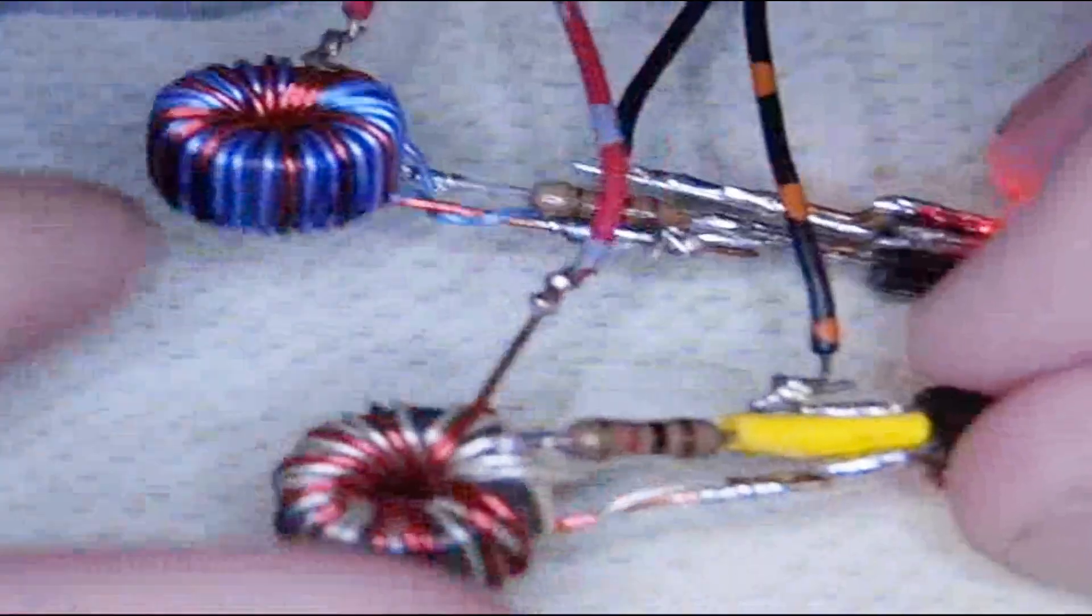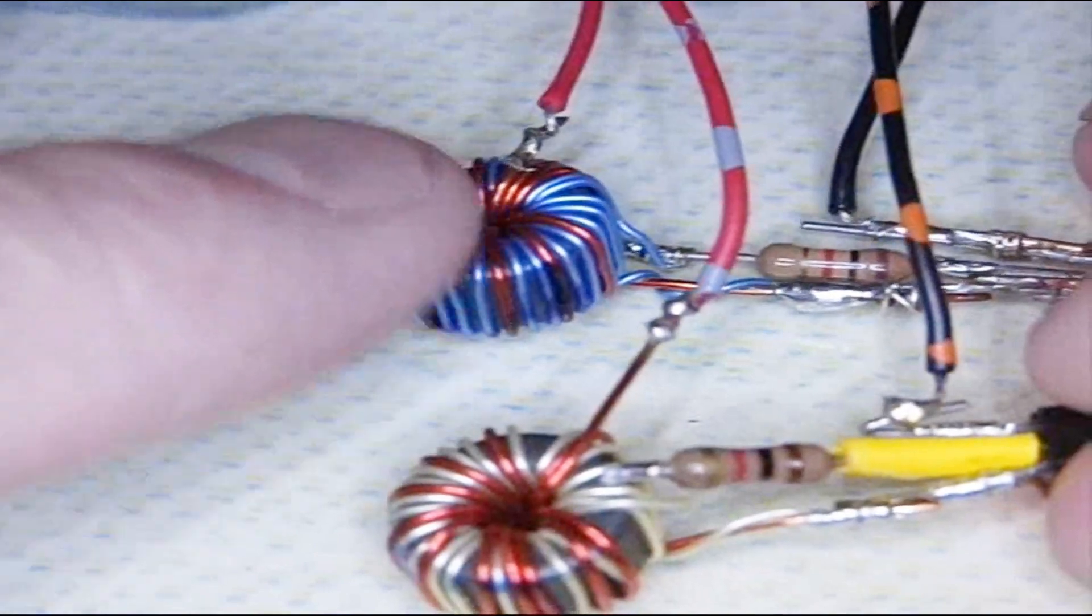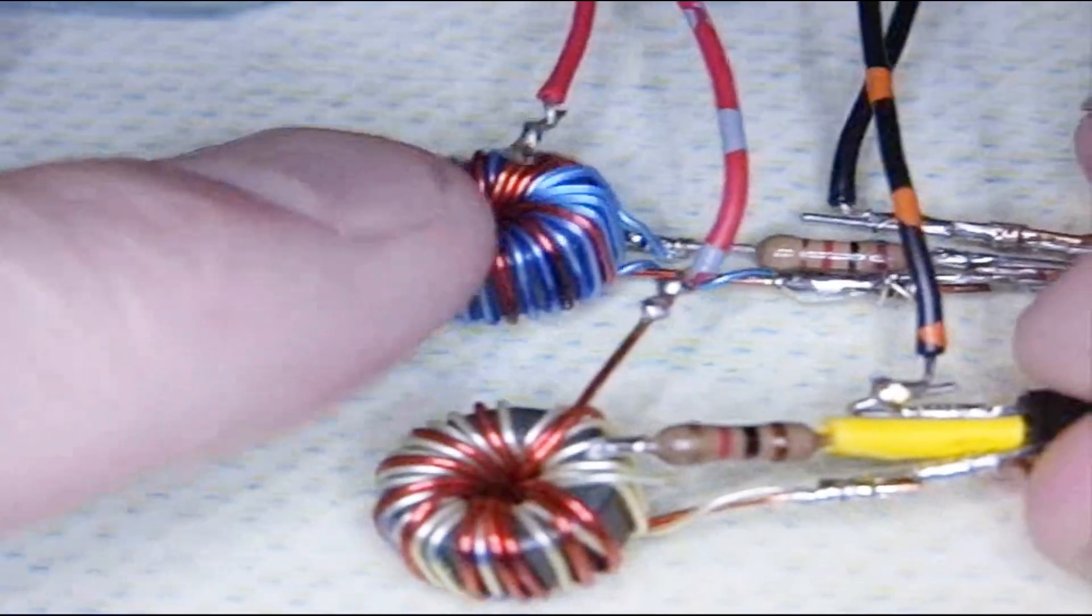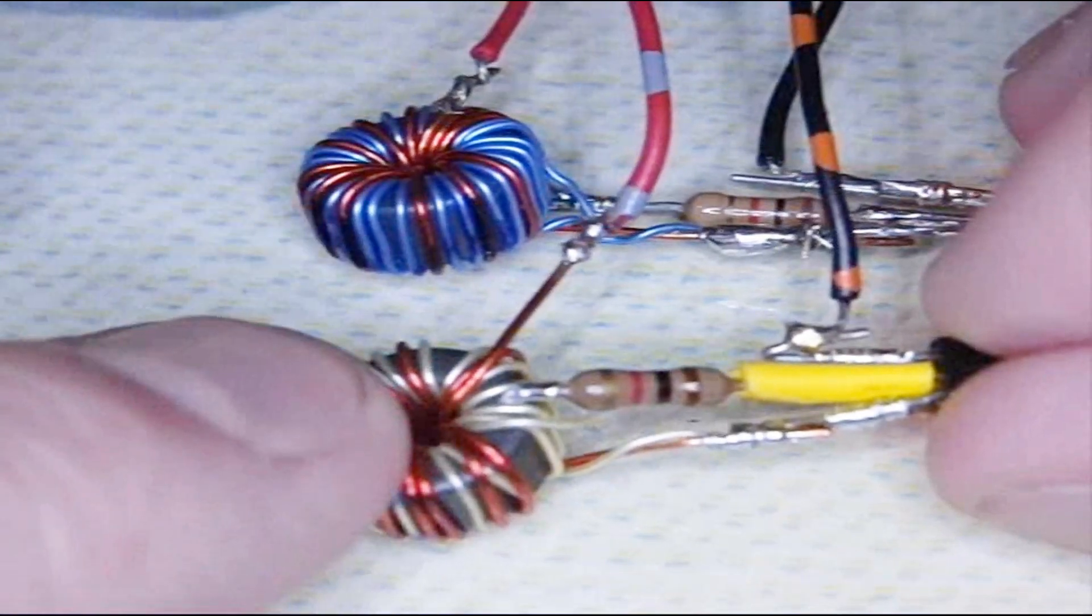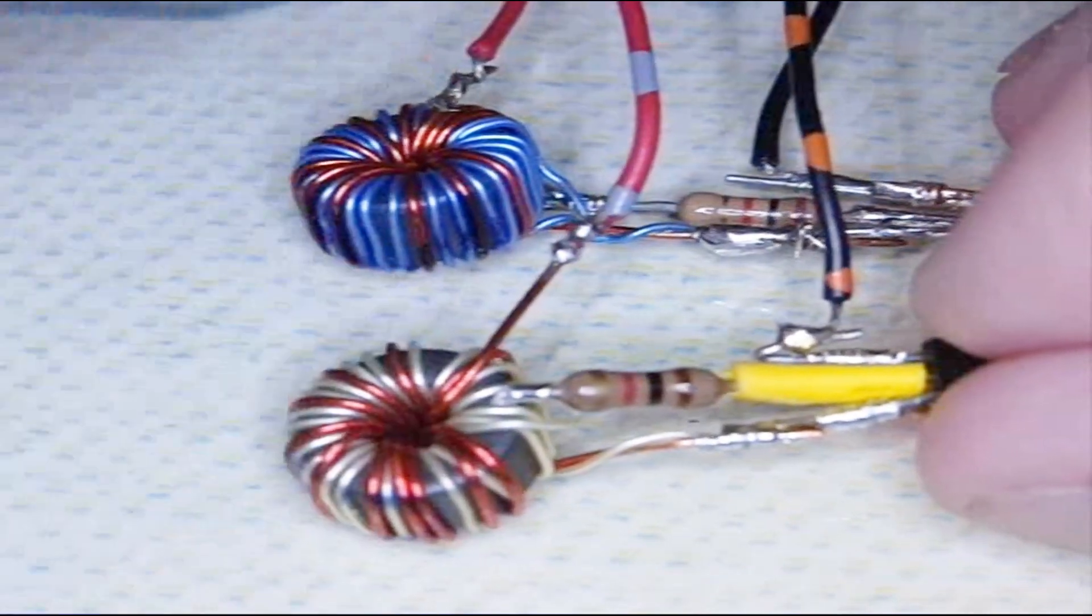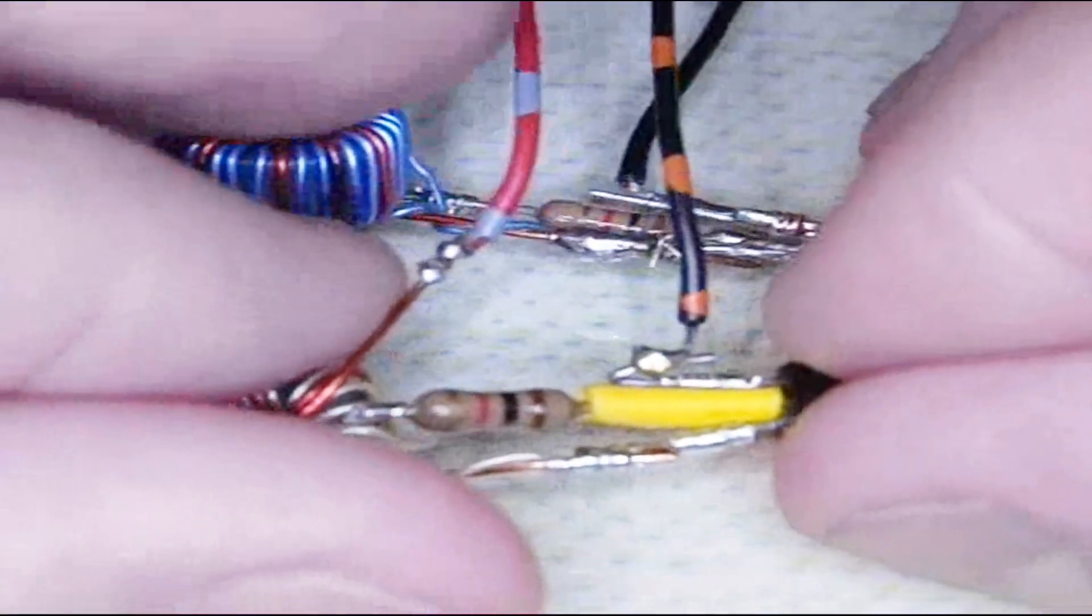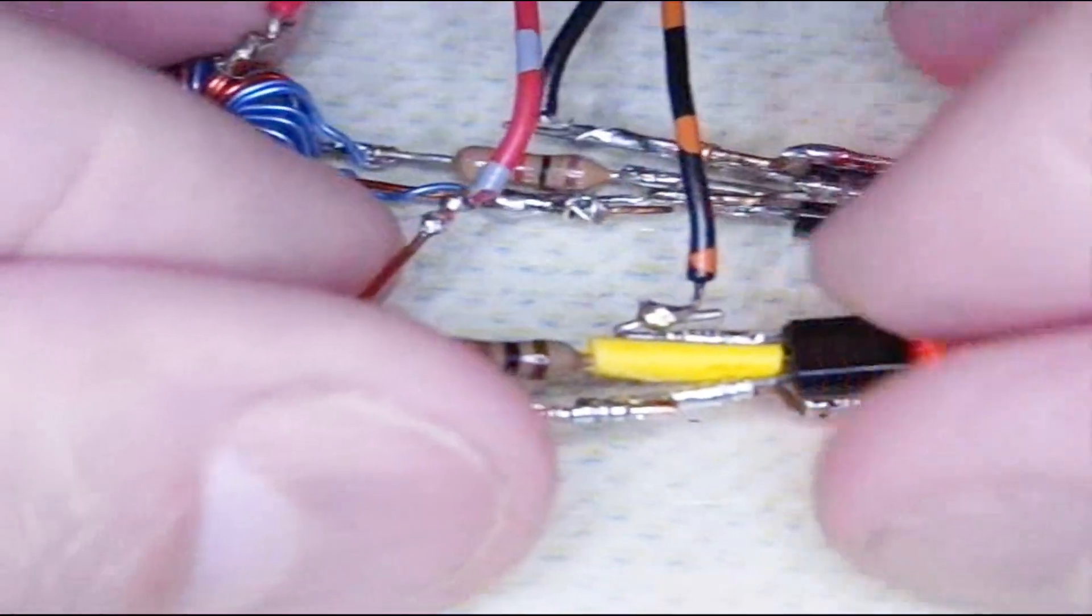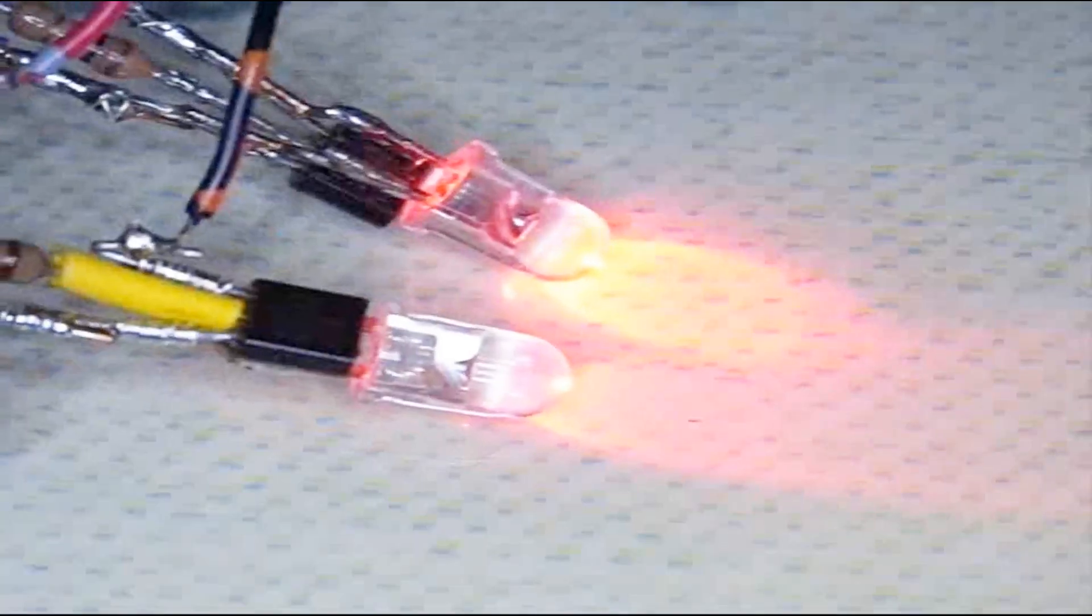Well to answer your question. That is the one where the coils are wrapped in the same direction. Both wires are wrapped in the same direction. And this is the one where they're wrapped opposite. So one is going counter-clockwise and the other is going clockwise. So same direction, opposite directions. And so that kind of answers that question. It looks like when they're wrapped in the same direction it works a little better.